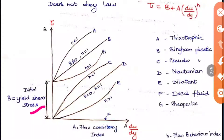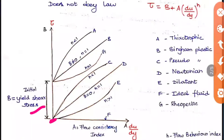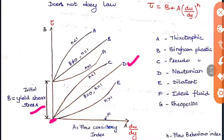When b = 0 and n = 1, it is a Newtonian fluid. When b = 0 and n < 1, it is a pseudo-plastic fluid. When b = 0 and n > 1, we call that fluid a dilatant fluid. These names are very important.